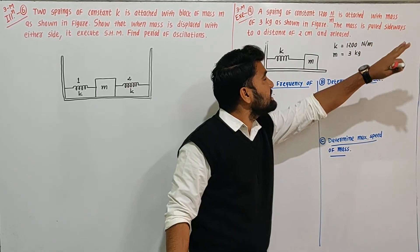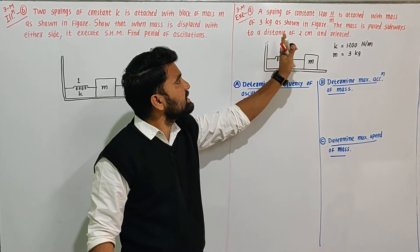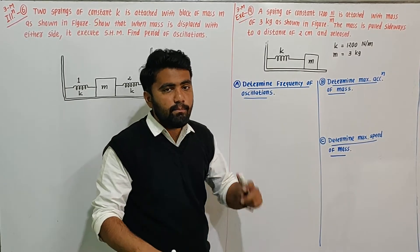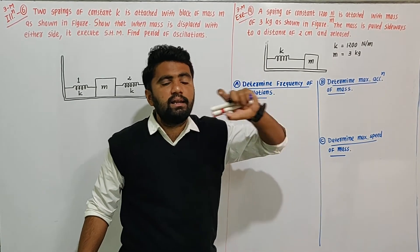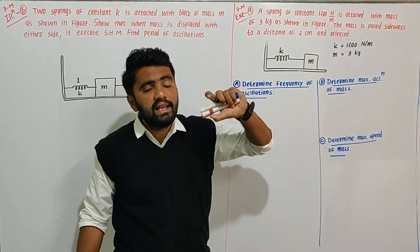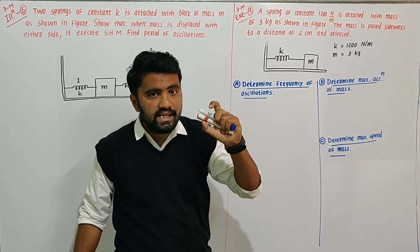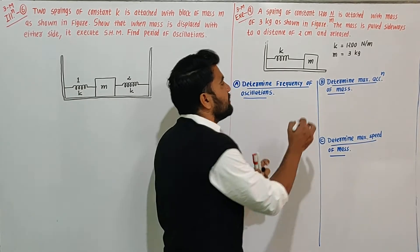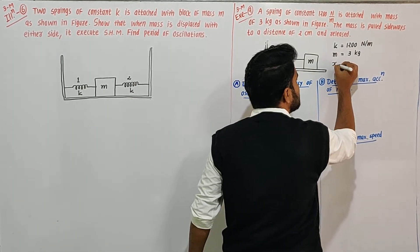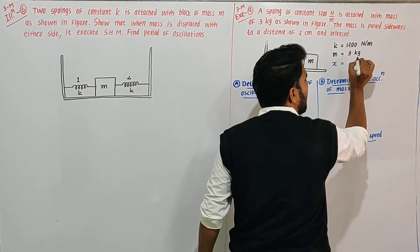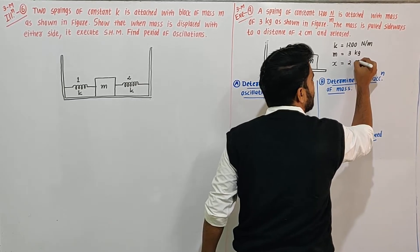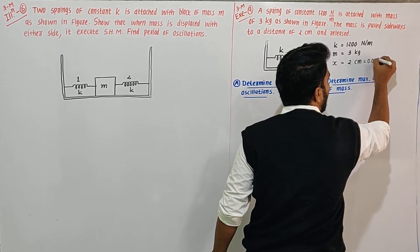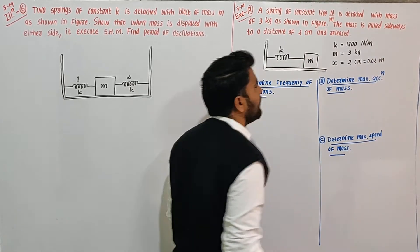The mass is pulled sideways to a distance of 2 cm and released. So the displacement x = 2 cm. We can also call this the amplitude. Converting to meters: 2 cm divided by 100 gives 0.02 meters.